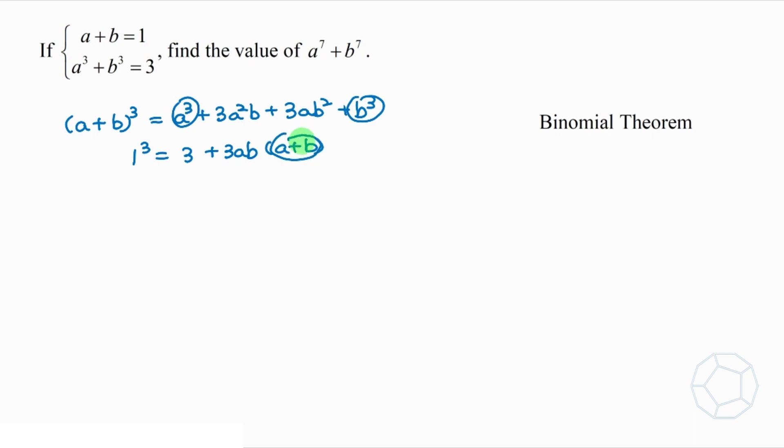Here, we get another a plus b equals to 1. Therefore, negative 2 is equal to 3ab. So ab is equal to negative 2 over 3.